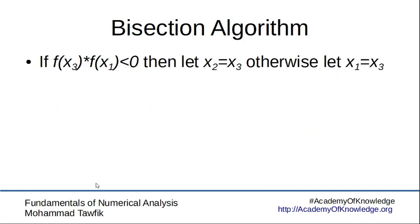Now comes the following step. If we didn't terminate, then we determine where would the new x3 go, whether should it be put instead of x2 or instead of x1. And that's determined by checking the sign of f of x3 relative to the others. So if f of x3 times f of x1 is less than 0, meaning they have different signs, then x3 goes to x2. Otherwise, x3 goes to x1.